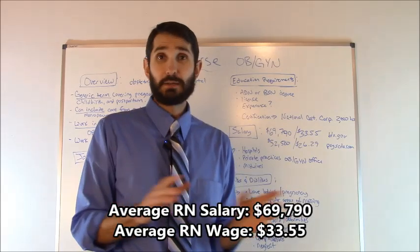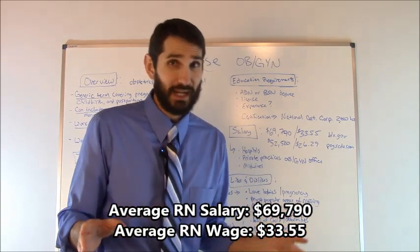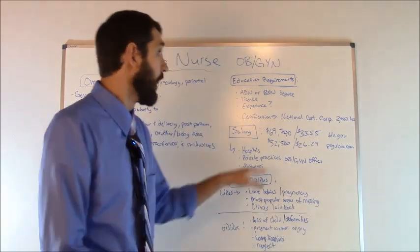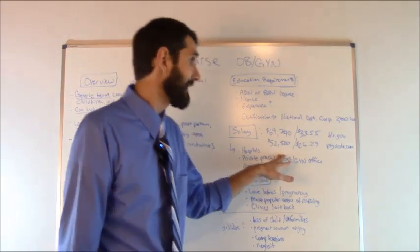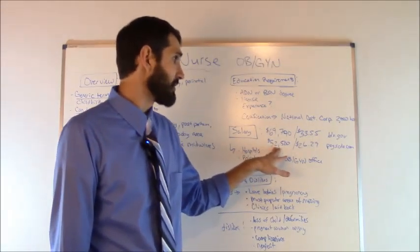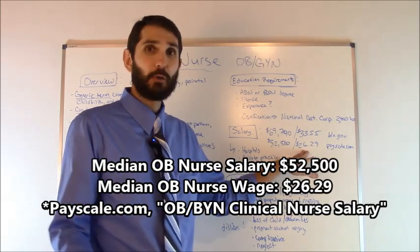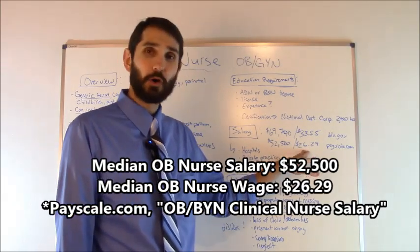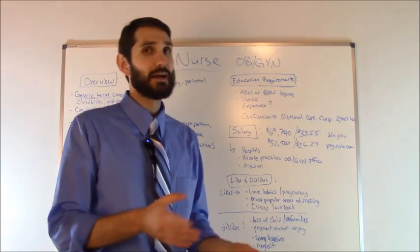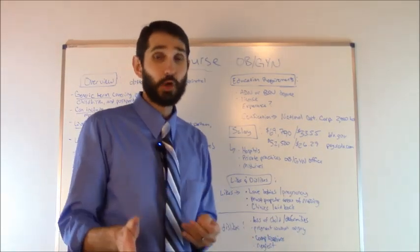Now that's all different types of registered nurses across the whole United States, so they didn't break it down based on specialty. According to payscale.com, they gave a median salary of $52,500 for OB nurses and a median hourly wage of $26.29 per hour. So that gives you an idea of approximately how much you can make as an OB nurse.